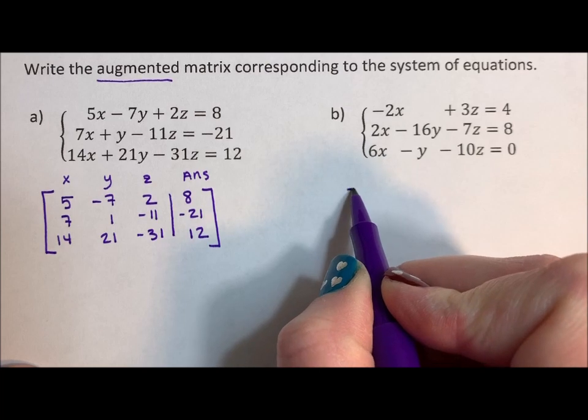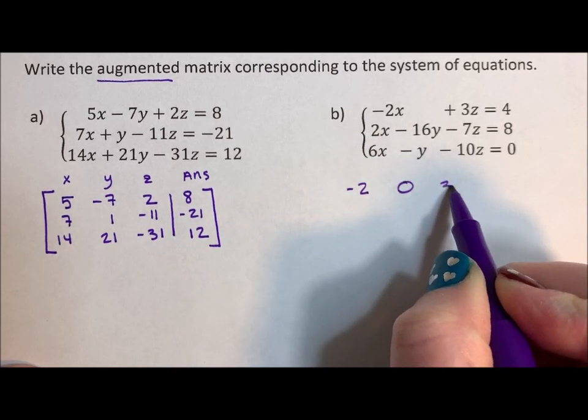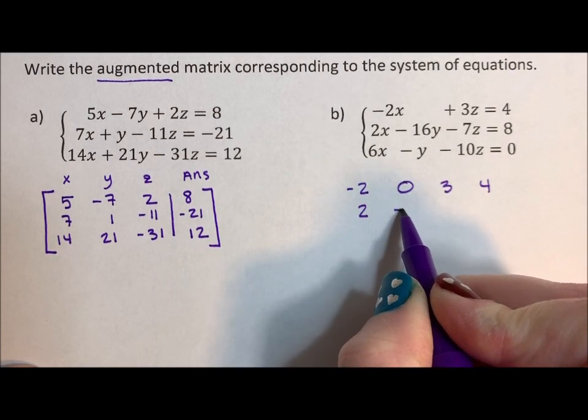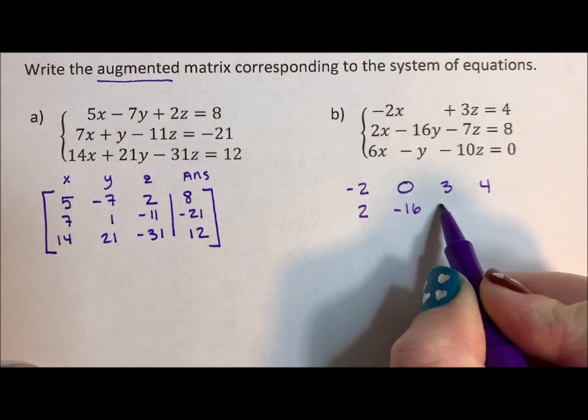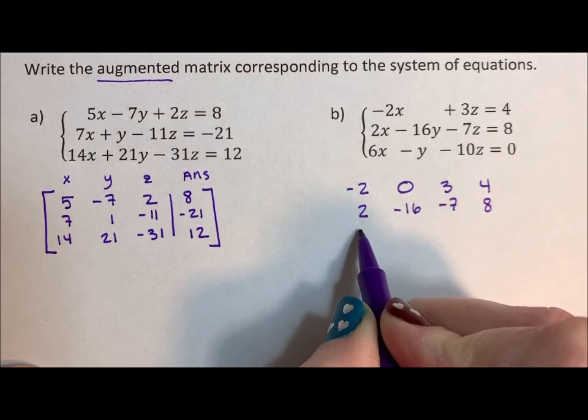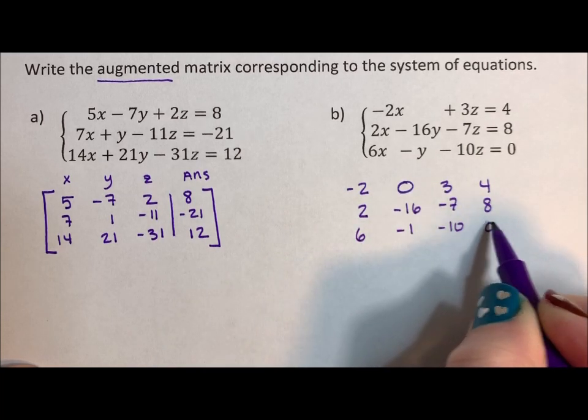so we have negative 2x, 0y, 3z equals 4, 2x, negative 16y, negative 7z equals 8, 6x, negative 1y, negative 10z equals 0.